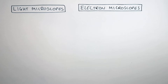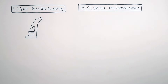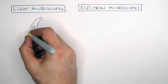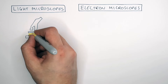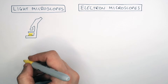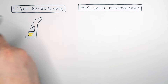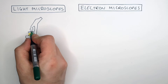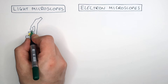In this video, we're going to compare light microscopes and electron microscopes. Light microscopes use a light source, and you place a live specimen onto the stage, so you can use a live specimen.